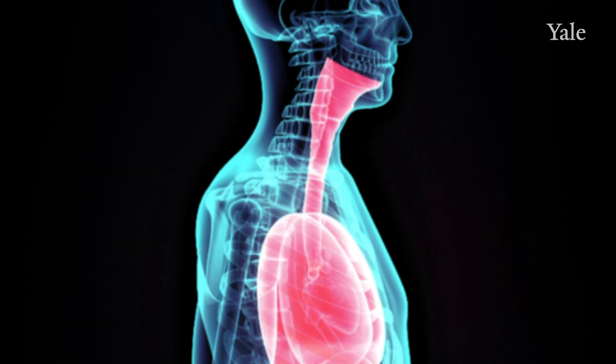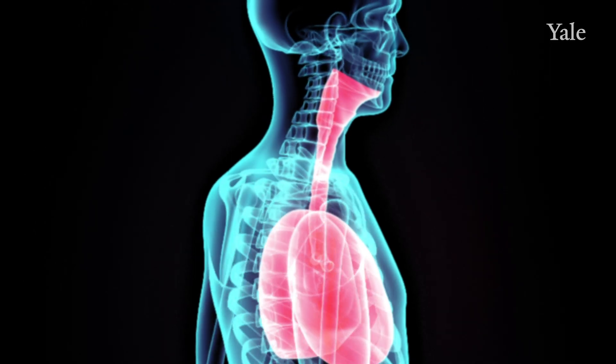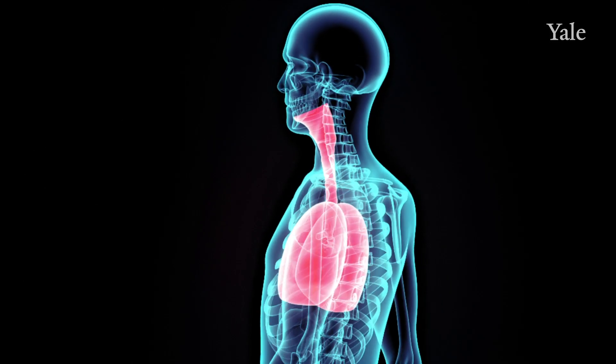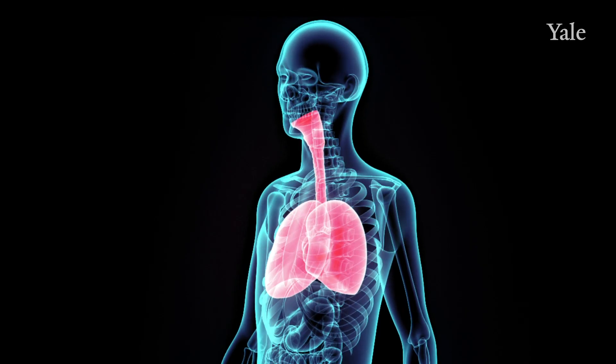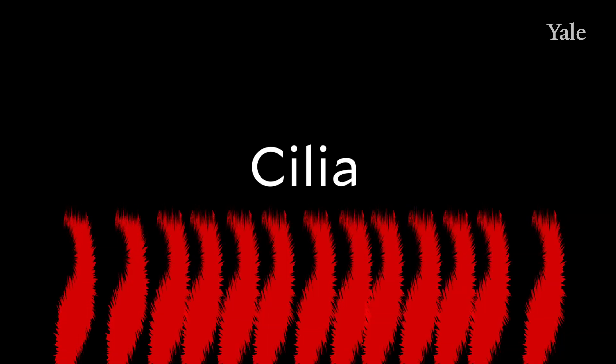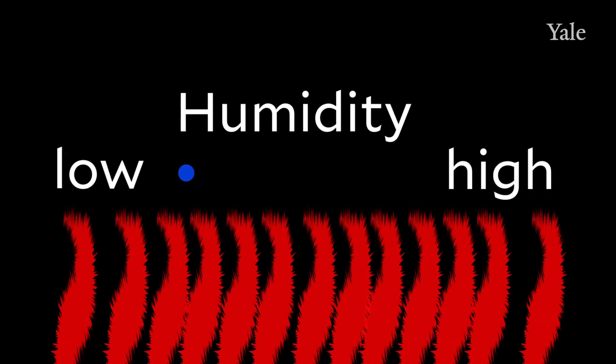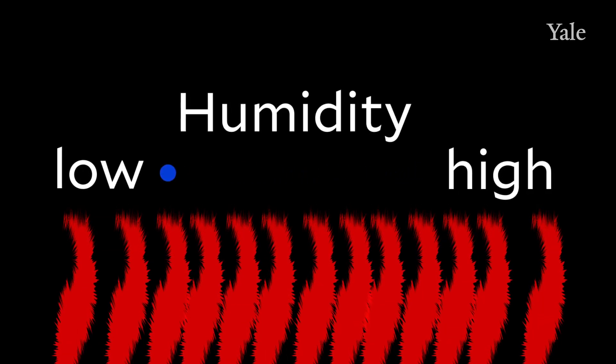What we found, first of all, is that the low humidity impairs the ability of the respiratory tract — the lung and the nose — to get rid of the virus. In the airway cells, there are these cilia, which are hair-like projections that are constantly moving particles along to get rid of inhaled particles. However, in low humidity, we found that this cilia movement, as well as the particle removal, was impaired.